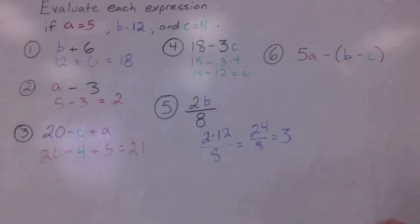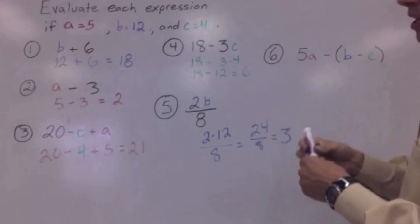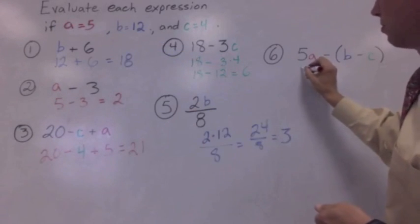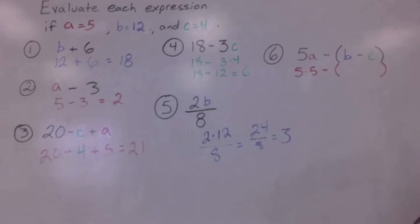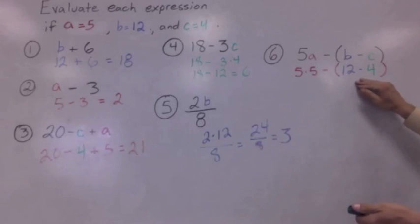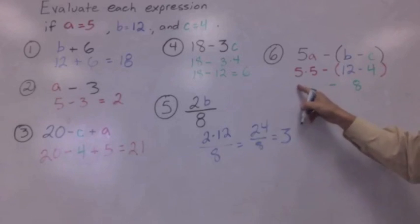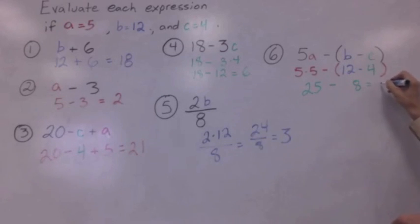Last problem. 5A, remember that just means five times A. That doesn't mean 50A. It means five times A. Remember that A is five, so we're going to go ahead and do five times five minus parentheses, and then we have B minus C. We know B is 12, and we know C is four. Remember in our order of operations, P stands for parentheses, that's first, so we do our parentheses first. Twelve minus four is eight. Five times five is 25. Twenty-five minus eight is easy, it's 17.